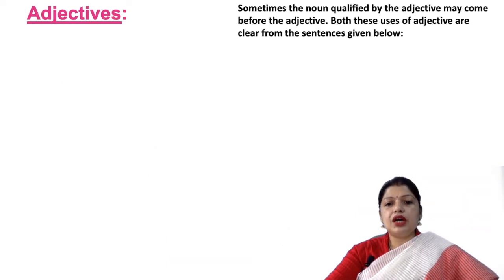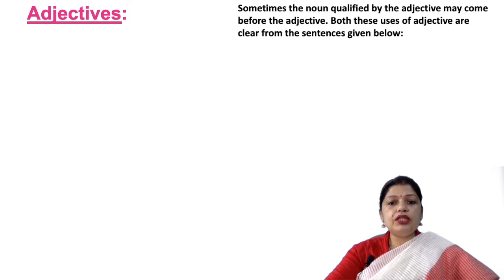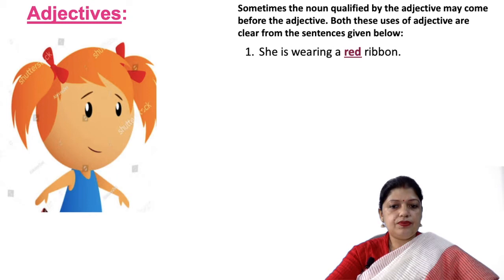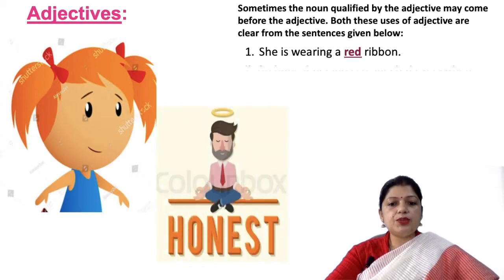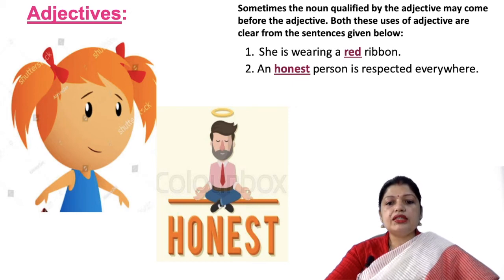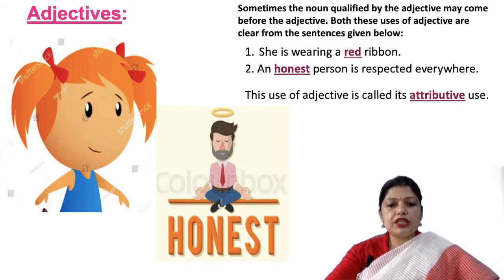Sometimes the noun qualified by the adjective may come before the adjective. Consider these sentences: 'She is wearing a red ribbon' and 'An honest person is respected everywhere.' In the first sentence, 'red' is the adjective, and in the second sentence, 'honest' is the adjective. This use of adjective is called its attributive use.